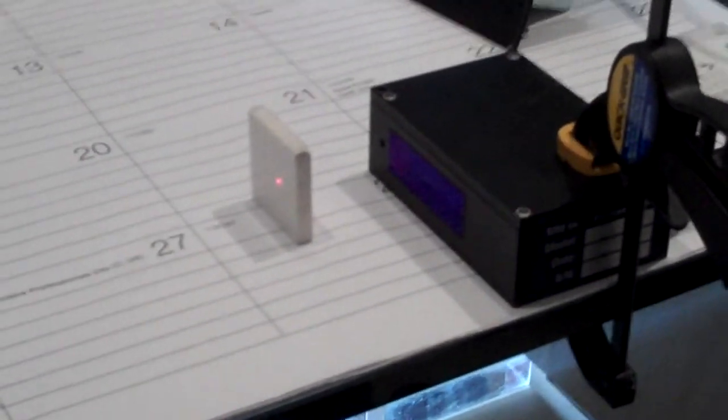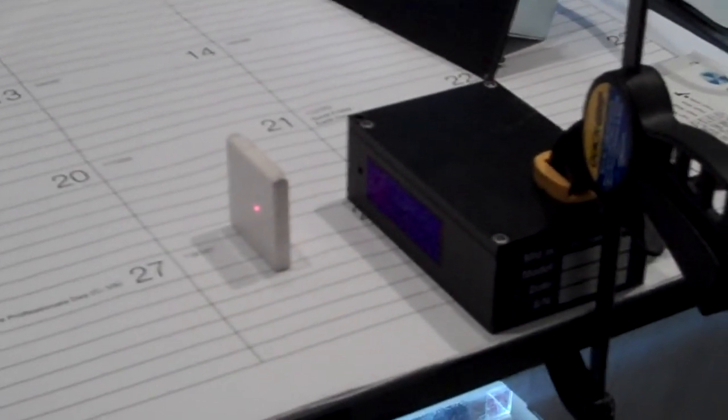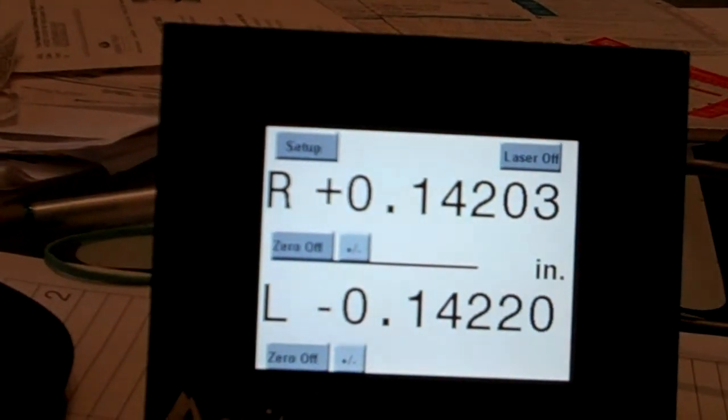As you can see in the middle I've got a 5 millimeter white ceramic gauge block as a target and what we're going to do is I'm going to walk you through the recommended way that I would set a laser up.